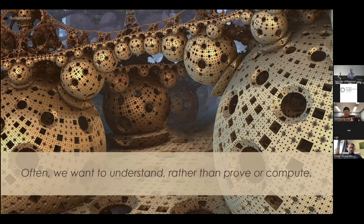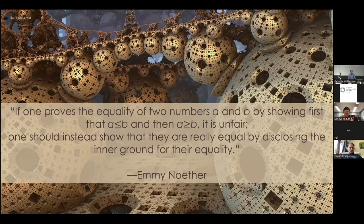So here's a quote from Emmy Noether, one of the great 20th century mathematicians. If one proves the equality of two numbers, a and b by first showing that a is less than or equal to b, and then a is bigger than or equal to b, it is unfair. Okay, I should emphasize this is a totally valid proof, but Emmy Noether is saying it is unfair. One should instead show that they are really equal by disclosing the inner ground for their equality. So notice the aesthetic sense in it is unfair. And mathematicians often have this sense that there's an inner ground for two things to be equal. So what Emmy appears to be talking about there is a desire for understanding of what's going on.